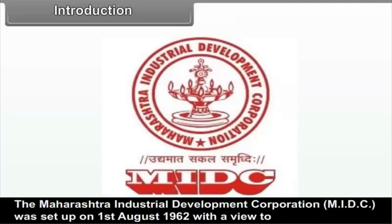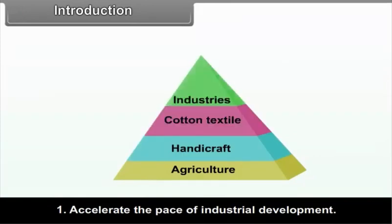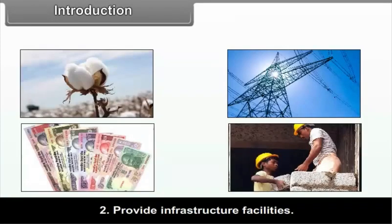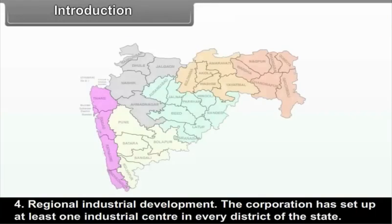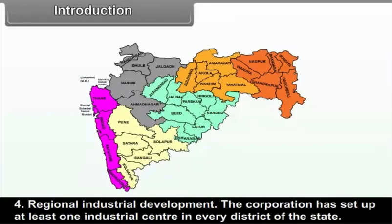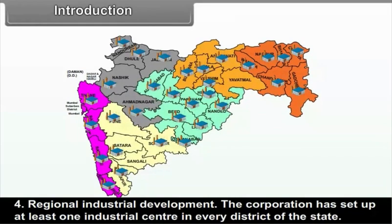The Maharashtra Industrial Development Corporation, MIDC, was set up on 1st August 1962 with a view to accelerate the pace of industrial development, provide infrastructural facilities, promotion of industries in underdeveloped regions and regional industrial development. The corporation has set up at least one industrial centre in every district of the state.